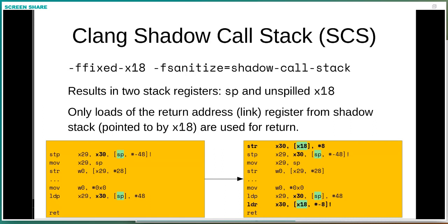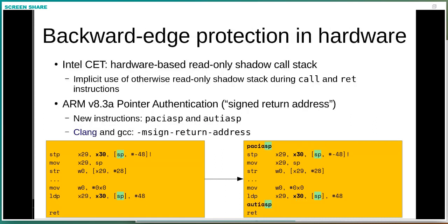In hardware this looks very similar. On ARM you have signed pointers — we sign what we store, and when we pull it back out we validate the bits. If validation fails, what got written ends up landing in the non-canonical zone, so when we return we end up jumping into the void.